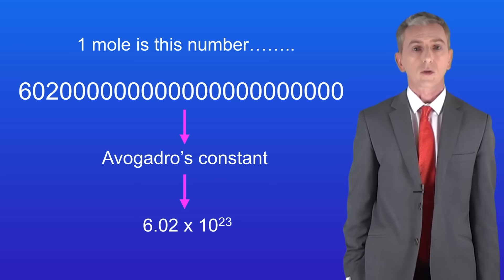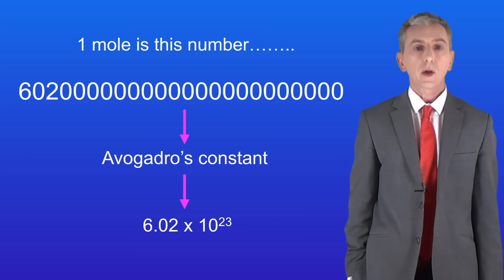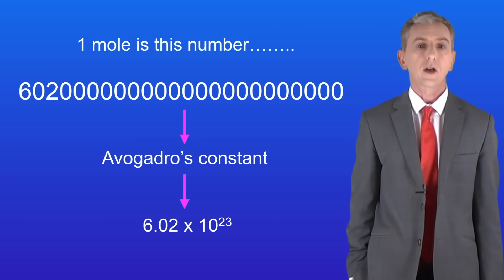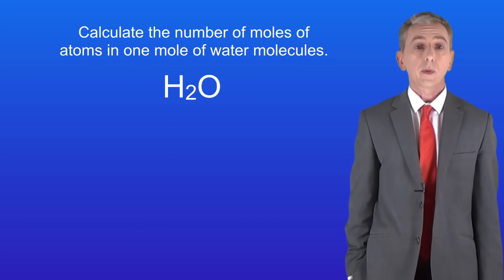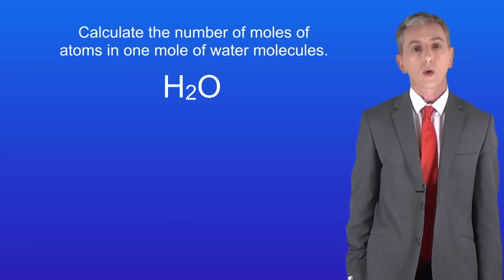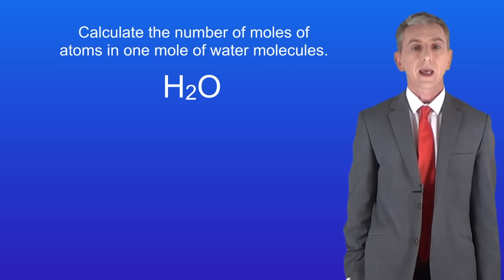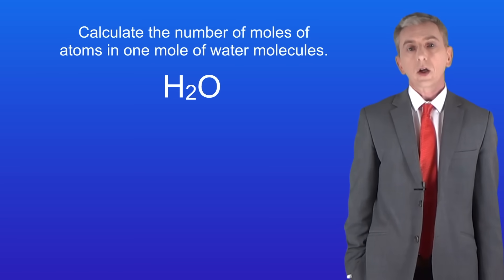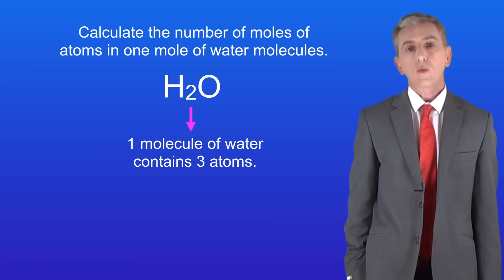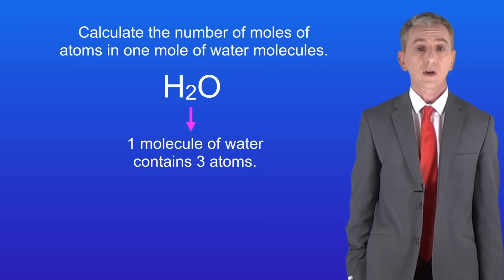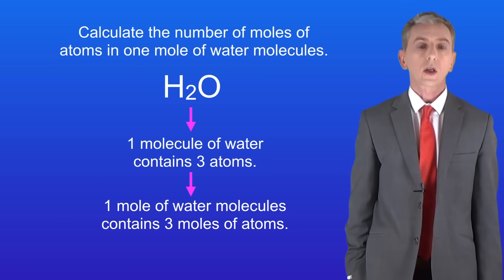Before we start working with Avogadro's constant, we're going to look at how we can calculate the number of moles of atoms in a given number of moles of a molecule. Here's a sample question: calculate the number of moles of atoms in one mole of water molecules, and water has a formula H2O. Looking at the formula we can see that one molecule of water contains two atoms of hydrogen and one atom of oxygen, so that makes three atoms in total. So if one molecule of water contains three atoms, then one mole of water molecules must contain three moles of atoms.